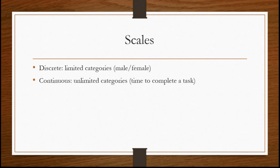Two broad ways of thinking about scales are discrete versus continuous. In discrete scales we have limited categories — for example, gender: male or female, only two categories. Continuous scales have unlimited categories, such as the time to complete a task. There's an infinite number of points in time, especially when broken down into tenths and hundredths of a second, making it very unlikely that two people would get the exact same time on a test.